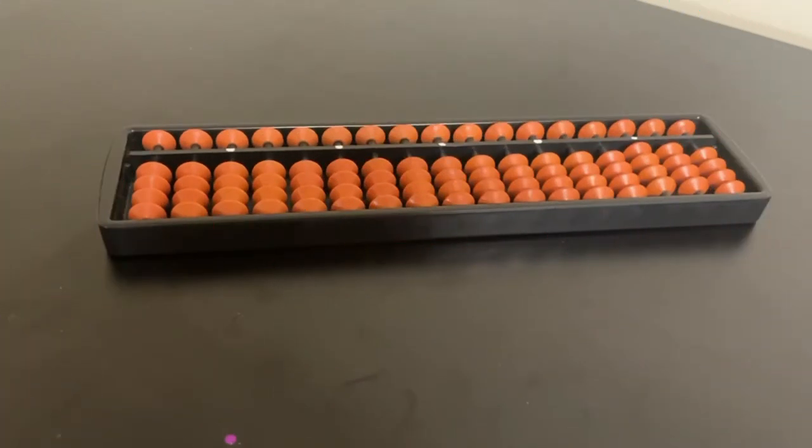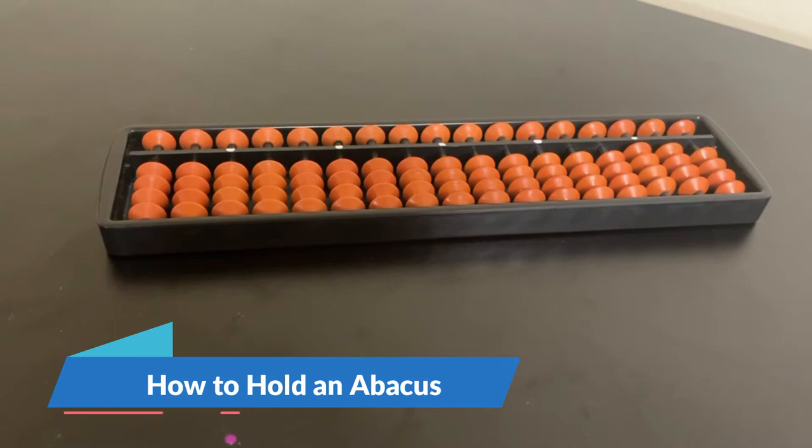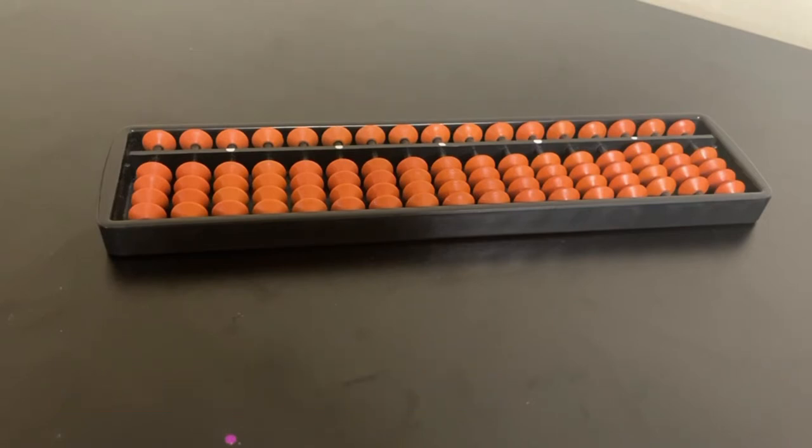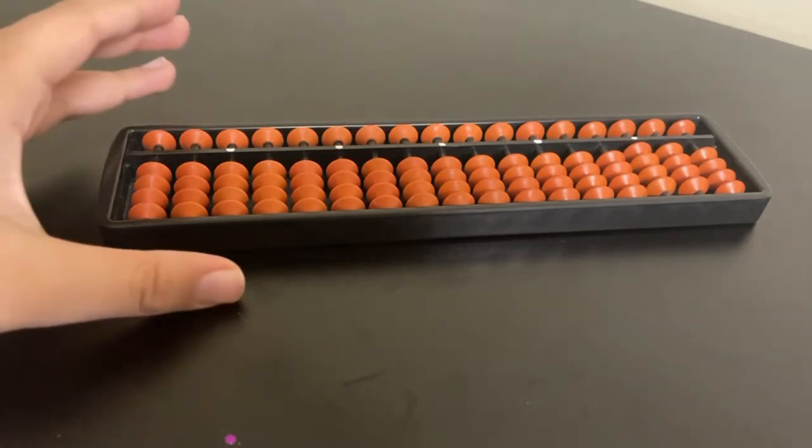So the first step in learning how to use the abacus is how to hold an abacus properly. First of all, we're going to take our index finger and pinky from our left hand and place it on the left side of our abacus.